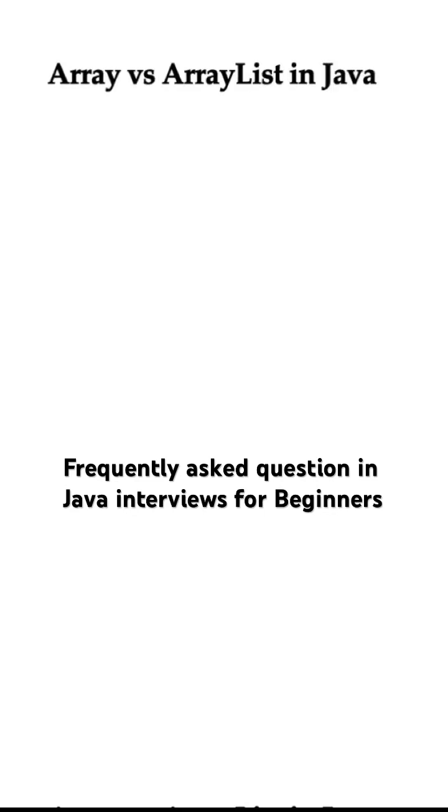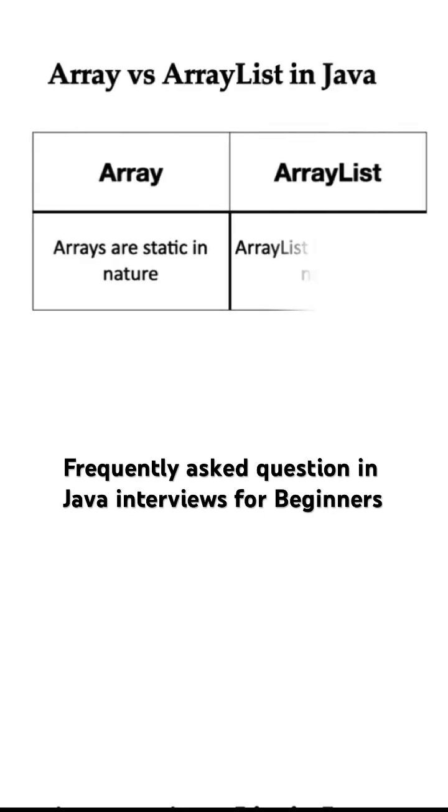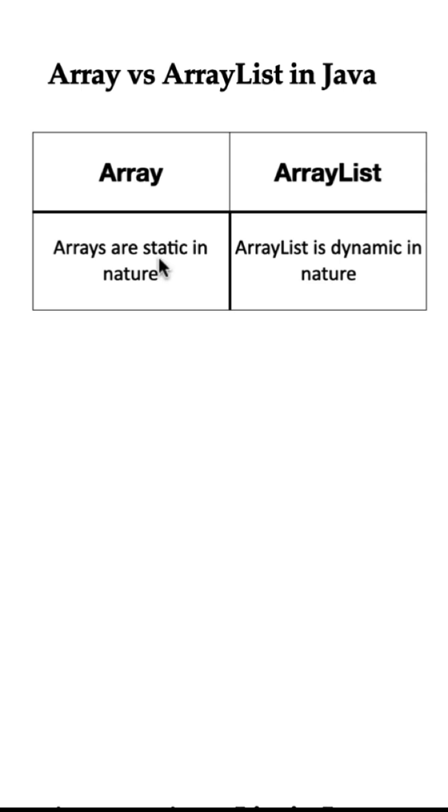What is the difference between array and ArrayList in Java? Arrays are static in nature, meaning their size is fixed upon creation and cannot be changed. ArrayList is dynamic in nature. It allows resizing itself automatically when elements are added or removed.